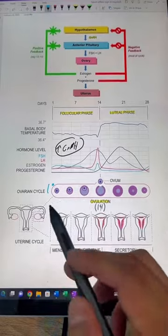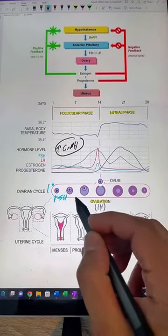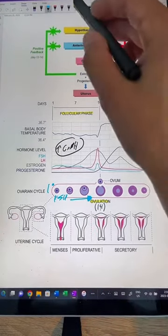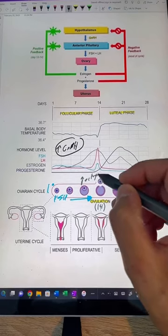Well, we said our ovaries have follicles, and it starts off as a primary follicle. FSH, follicle-stimulating hormone, as the name implies, stimulates the growth of our follicles. And as it does that, they secrete a really important hormone called estrogen.